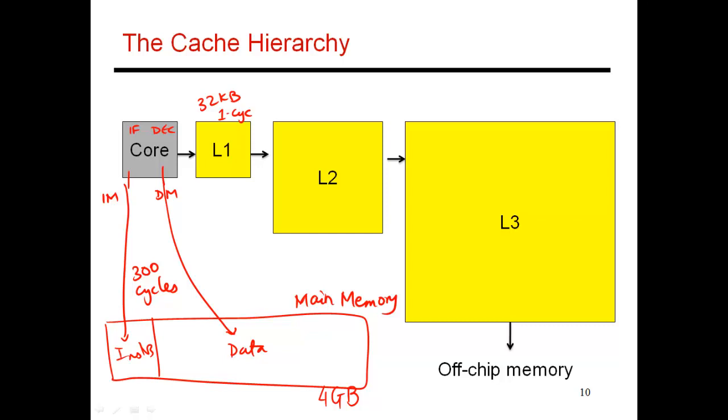Usually programs exhibit locality. And this is called spatial locality and temporal locality. So there are two forms of locality.